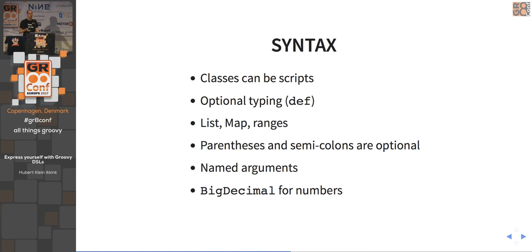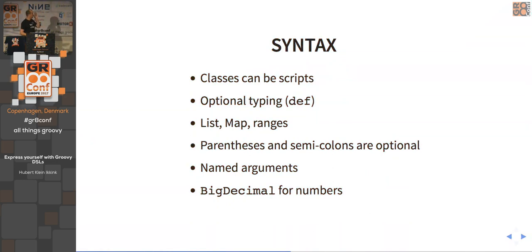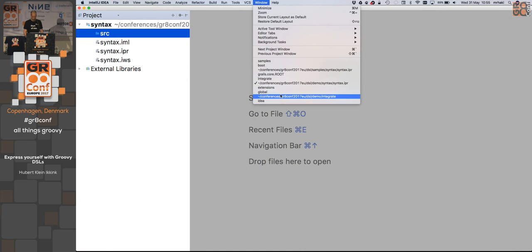Looking at Groovy syntax: classes can be scripts, so unlike Java you don't need a class declaration or a main method. Optional typing means you can use def as a keyword instead of specifying a type. Defining lists, maps, and ranges is very easy compared to Java. Parentheses and semicolons are optional. There's support for named arguments, and BigDecimal is the default for numbers in Groovy — very useful for financial applications where you can use simple operators instead of method names.